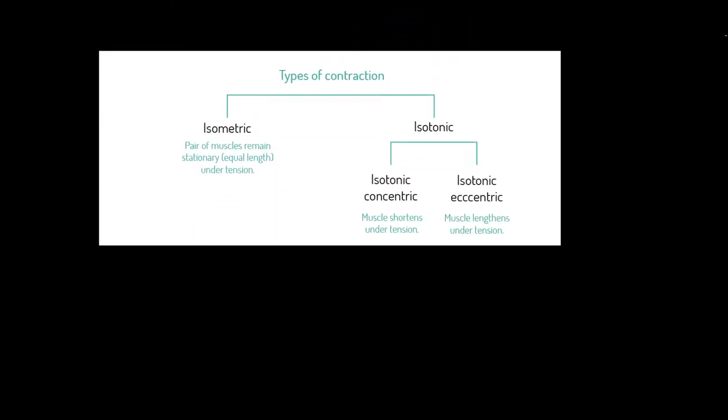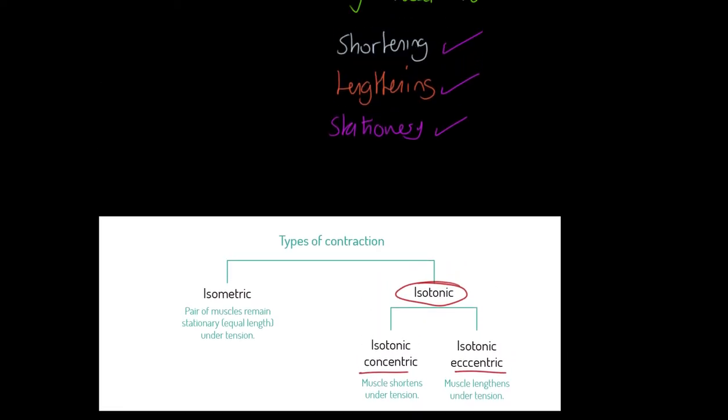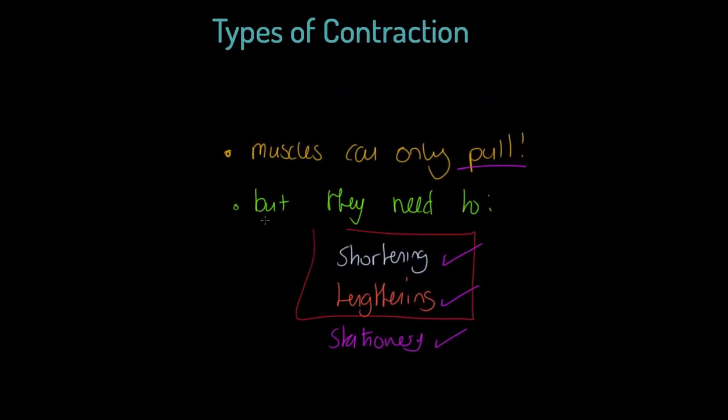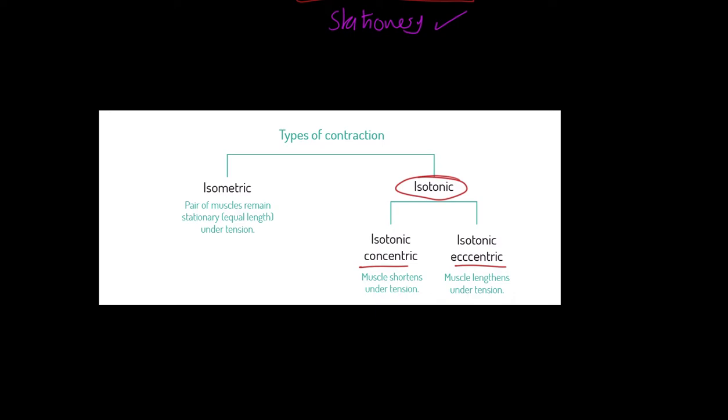We effectively have got three types of contractions. There is another one called an isokinetic contraction we don't cover in this course. I want you to familiarize yourself with the term isotonic. We have two types of isotonic contractions in the human body: isotonic concentric and isotonic eccentric. An isotonic contraction is when movement is occurring. Which type of isotonic depends on the nature of the movement.